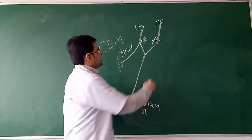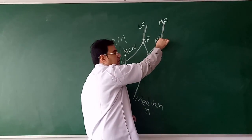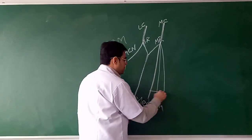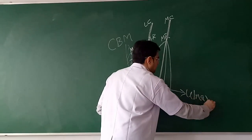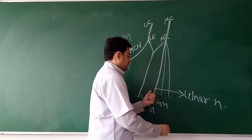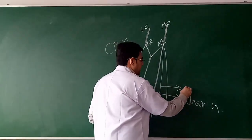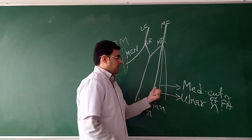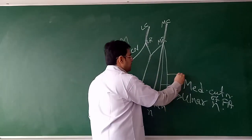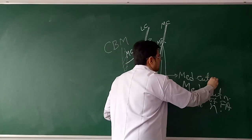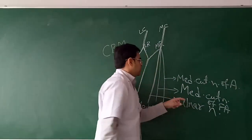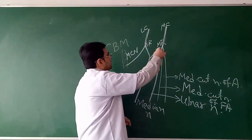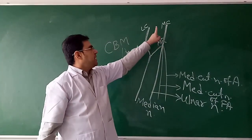Tracing the medial root of the median nerve coming from the medial cord, and tracing the medial cord downward, you will find three nerves coming down from the medial cord. The most important is the ulnar nerve, which is comparatively thicker. Along with the ulnar nerve, you will find the medial cutaneous nerve of the forearm, and a thinner one which is the medial cutaneous nerve of the arm.